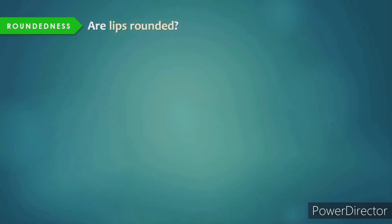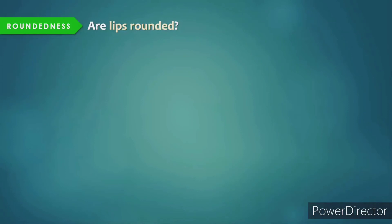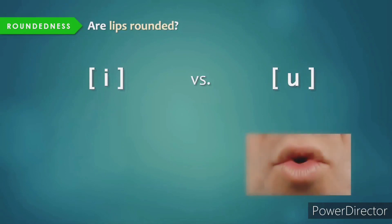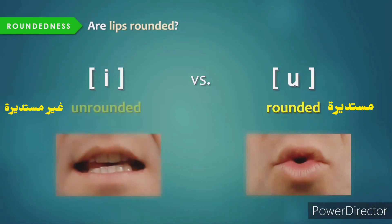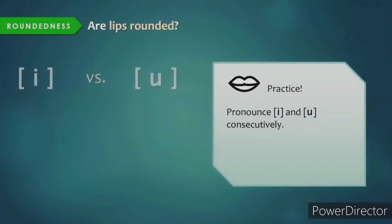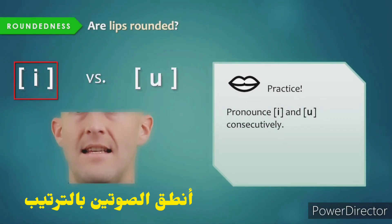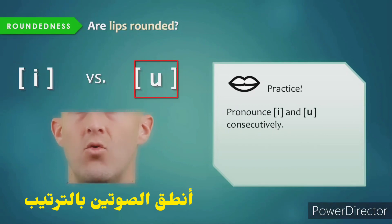The third criterion that linguists use when describing vowels is roundedness — whether or not the lips are rounded when producing the vowel. This is easy to feel and see when producing a rounded sound. Take the two sounds ee and oo: oo, as you can clearly see and feel, is a rounded vowel, whereas ee is not a rounded vowel.